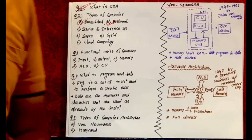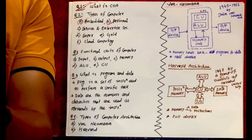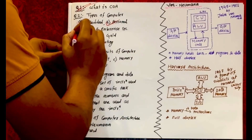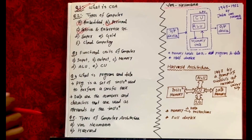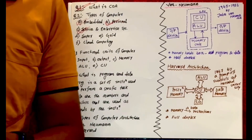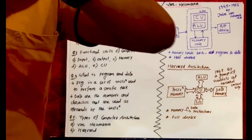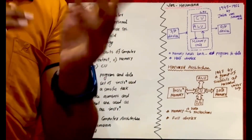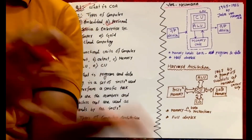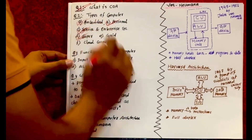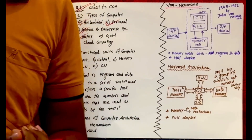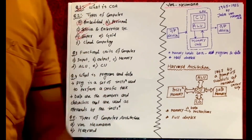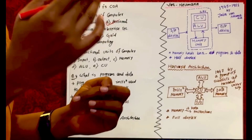Number two is personal computers — the computer systems we use for personal use, like laptops, tablets, and mobile phones. Number three is server and enterprise systems — large computers used for a particular enterprise or organization to perform a set of specific tasks, not a single purpose but multiple specific tasks for an organization or research. Number four is supercomputers — the fastest computers we have, capable of performing massive mathematical calculations in a second or less.